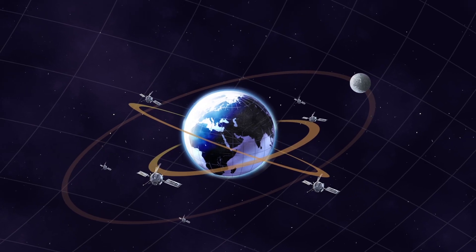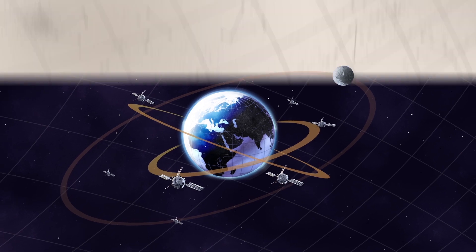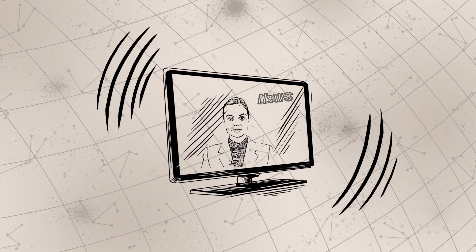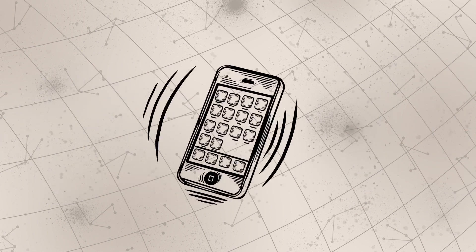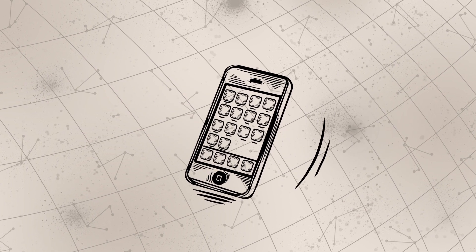Thousands of satellites are flying around the planet we live on right now. Some of them are used for television, some for secure communications, internet connections, and so on.